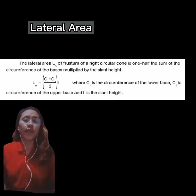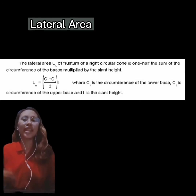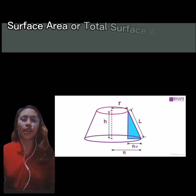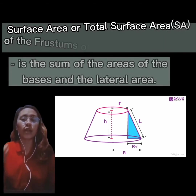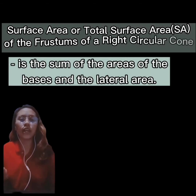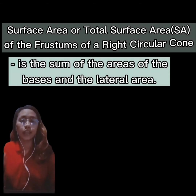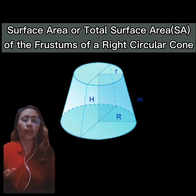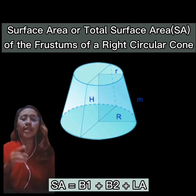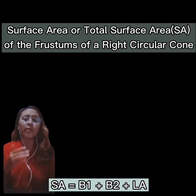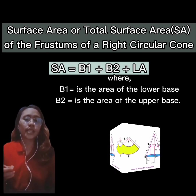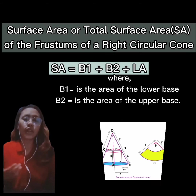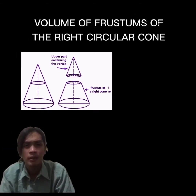We will now proceed to the total surface area of the frustum of a right circular cone. The total surface area is the sum of the areas of the bases and the lateral area. The formula is: SA = B₁ + B₂ + Aₗ, where B₁ is the area of the lower base, B₂ is the area of the upper base, and Aₗ is the lateral area solved earlier.